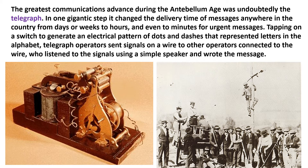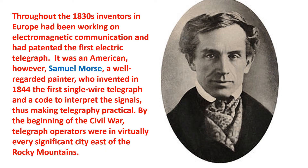The greatest communications advance during the antebellum age was undoubtedly the telegraph. In one gigantic step, it changed everything. It changed the delivery time of messages anywhere in the country from days or weeks to hours, and even to minutes for urgent messages. Tapping on a switch to generate an electrical pattern of dots and dashes that represented letters in the alphabet, telegraph operators sent signals on a wire to other operators connected to that wire, who listened to the signals and wrote the message. Throughout the 1830s, inventors in Europe had been working on electromagnetic communication and had patented the first electric telegraph. It was an American, however, Samuel Morse, a well-regarded painter, who invented in 1844 the first single-wire telegraph and a code to interpret the signals, thus making telegraphy practical.